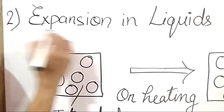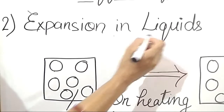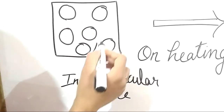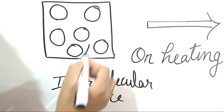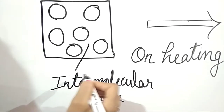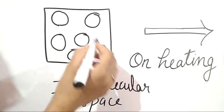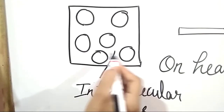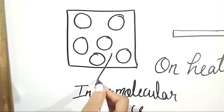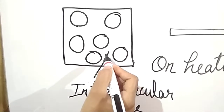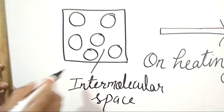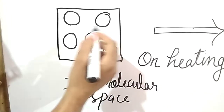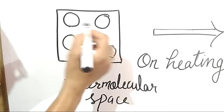Now we will understand expansion in liquids. You can see this is a part of any liquid. The molecules are loosely packed, meaning the space between the molecules is more than in solids, so they can vibrate and move. They can move easily because they have more space than solids and less force of attraction between the molecules.